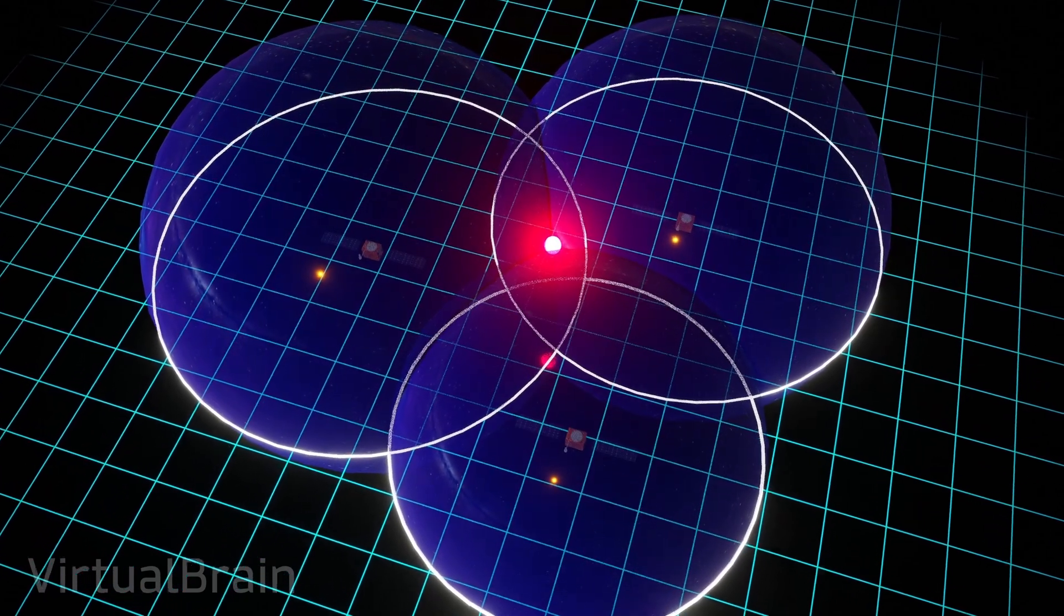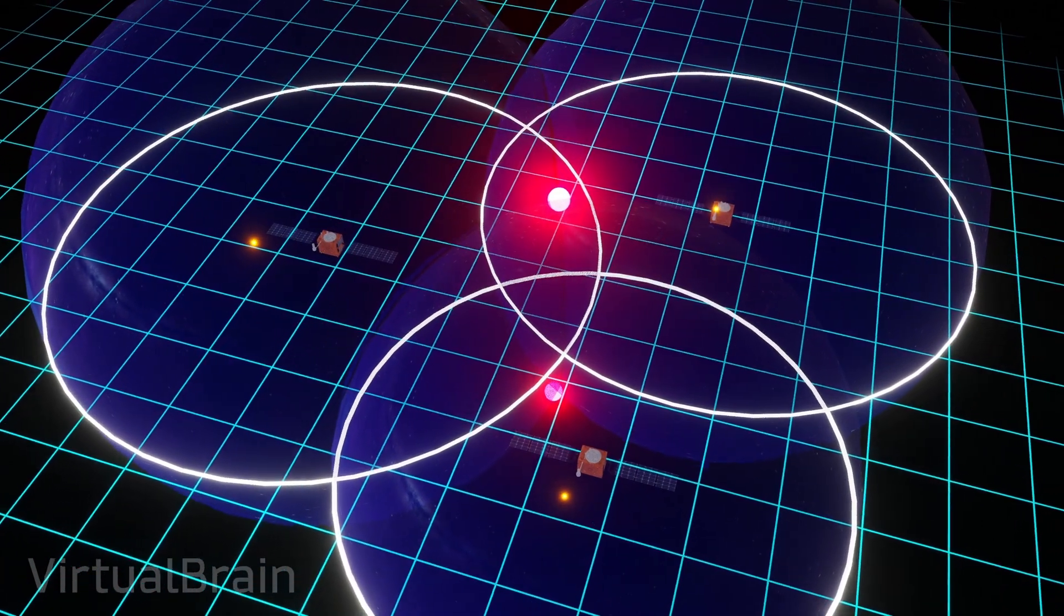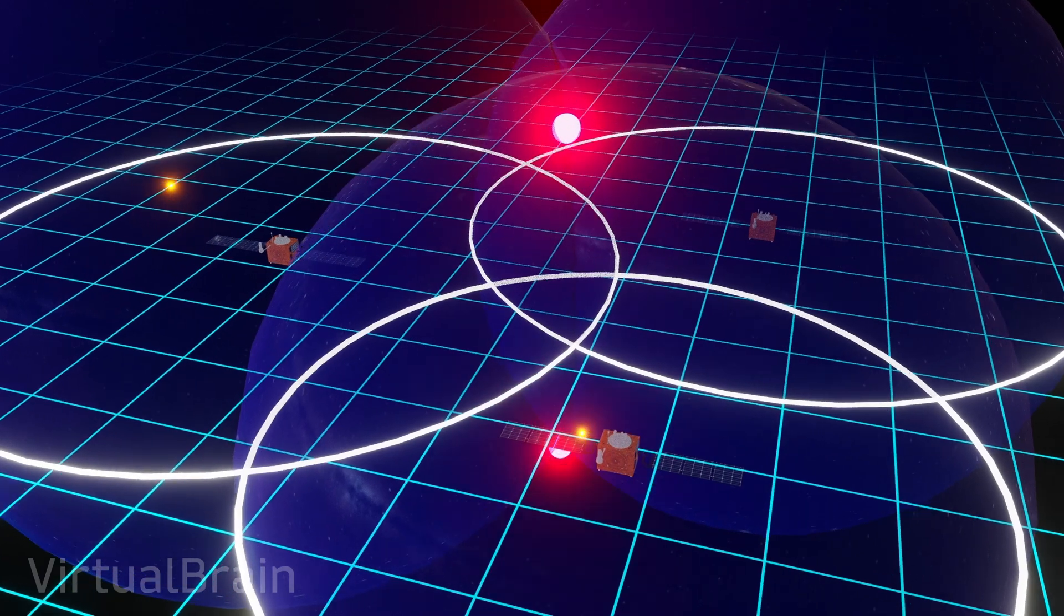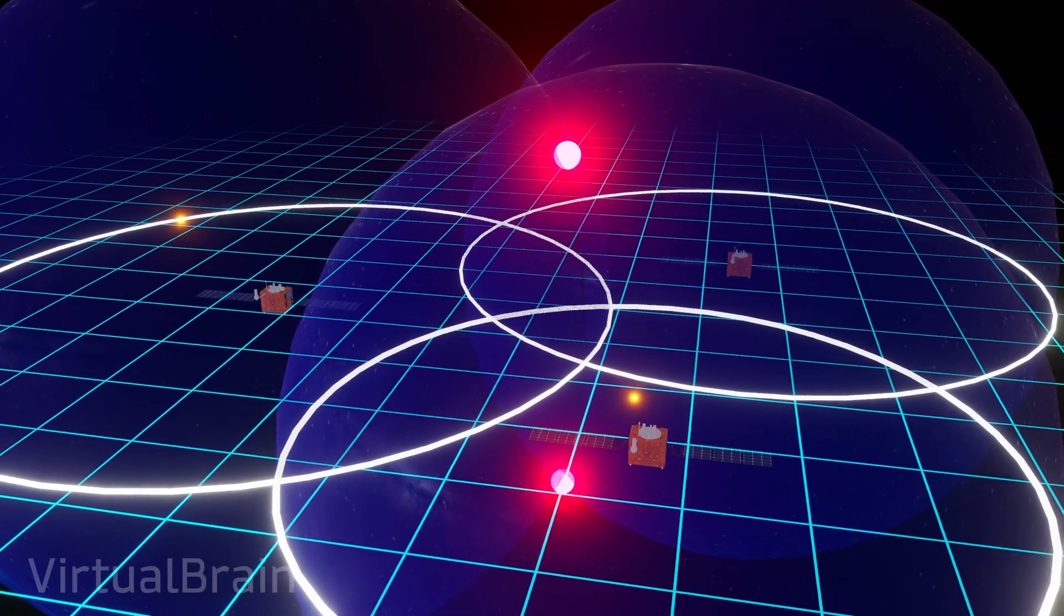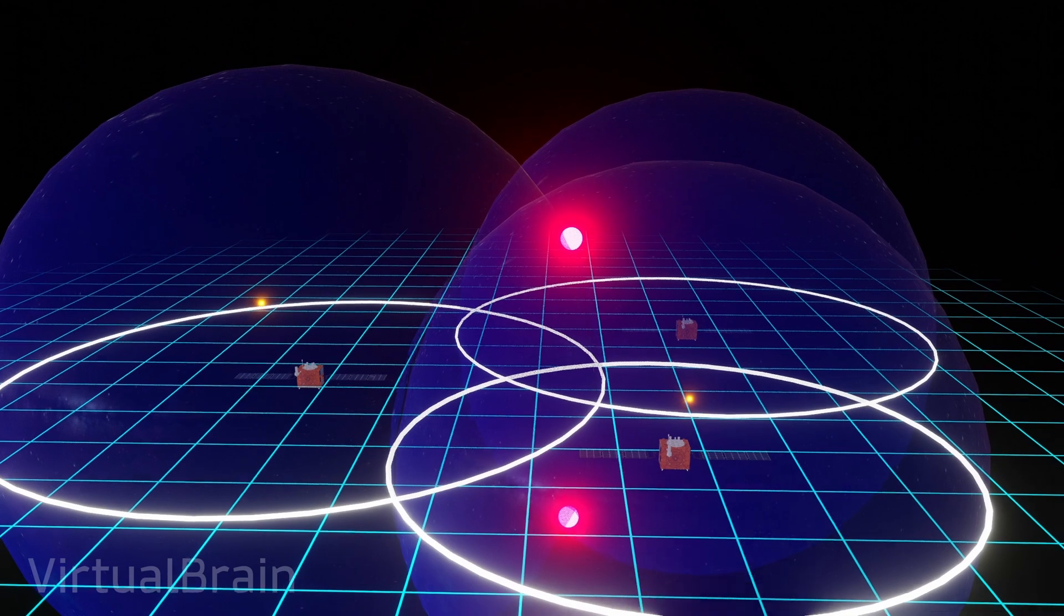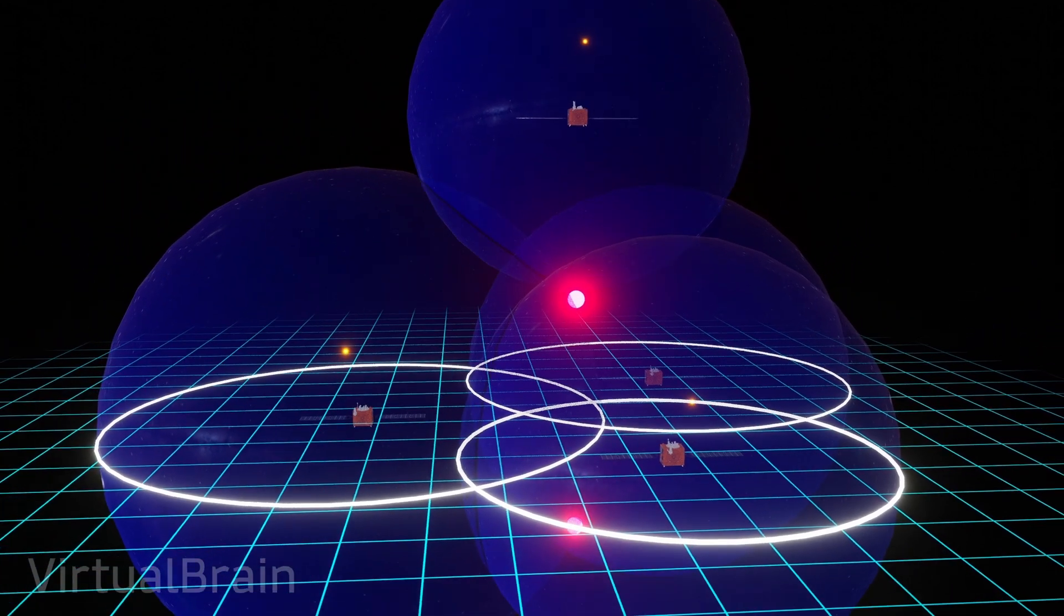As we can see in this example, there will be two points in space where the three spheres intersect, and similar to what we did before, the way to eliminate this uncertainty is to add one more satellite that gives us information of its position and distance.